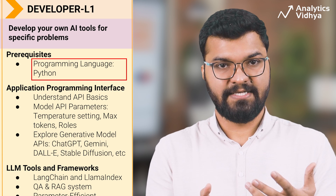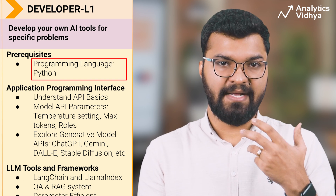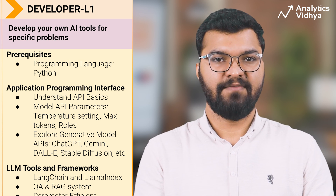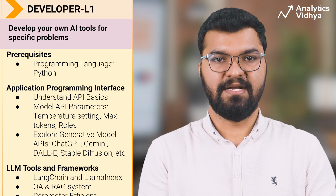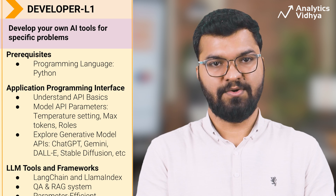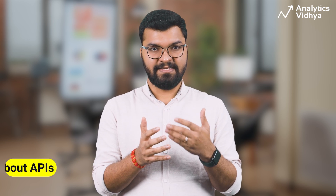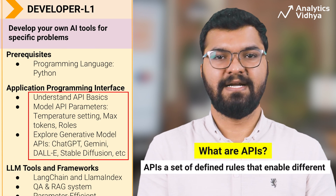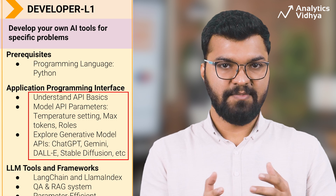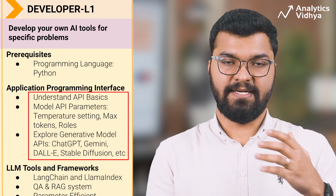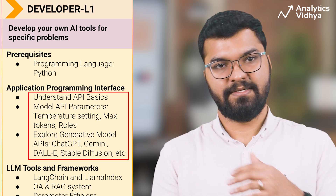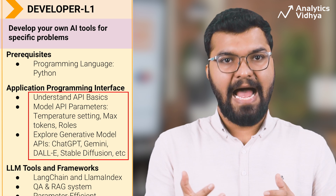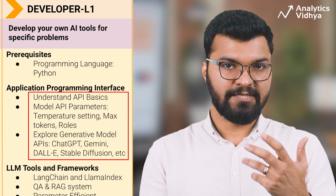There are some prerequisites to developer level one: a basic understanding of Python, since it is key to interacting with generative AI models via their APIs. Start by understanding what APIs are and how they work — APIs are a set of defined rules that enable different applications to communicate with each other. Then study generative model API parameters like temperature setting, max tokens, and roles such as system, user, and assistant, and learn how these parameters control the behavior and length of the model's response.